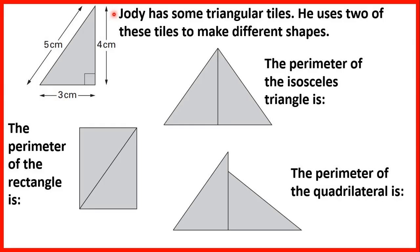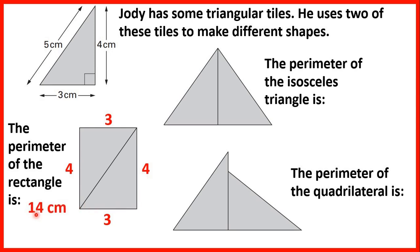Jody has some triangular tiles. He uses 2 of these tiles to make different shapes. We can see that he's using tiles with lengths of 5, 4 and 3 cm. Let's look at the first shape. We need to work out what the perimeter of the rectangle is. The perimeter is the distance around the outside. This length must be 4, and the other side must be 4 as well. Then we have 3 at the top and 3 at the bottom. So 4 plus 3 plus 4 plus 3 gives us 14. The perimeter of this rectangle is 14 cm.